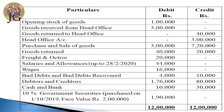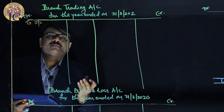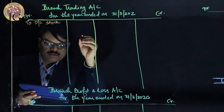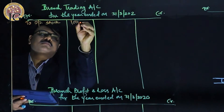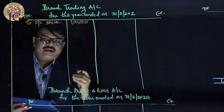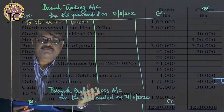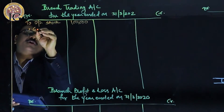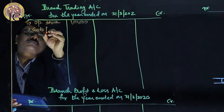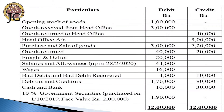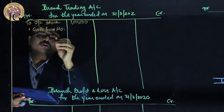Starting with opening stock of goods — opening stock of ₹1 lakh is shown on the debit side of the trading account. Then goods received from head office: for an independent branch, goods from head office is just like a purchase from the market, so it is recorded as a purchase in the trading account — goods from head office in the inner column: ₹3 lakhs.